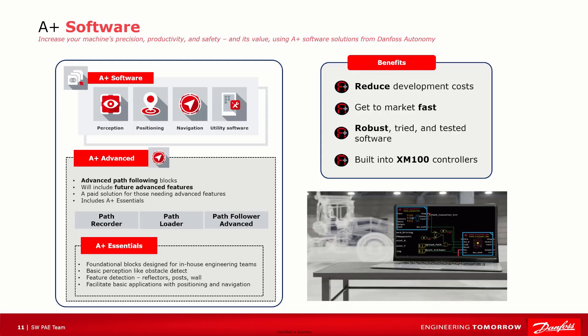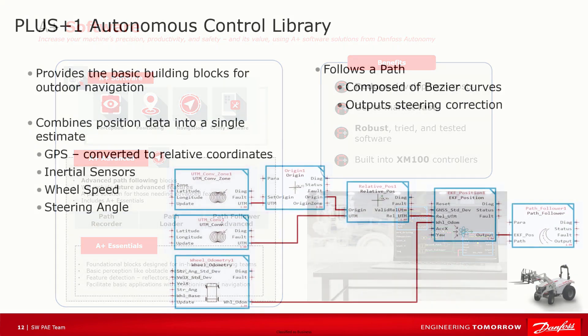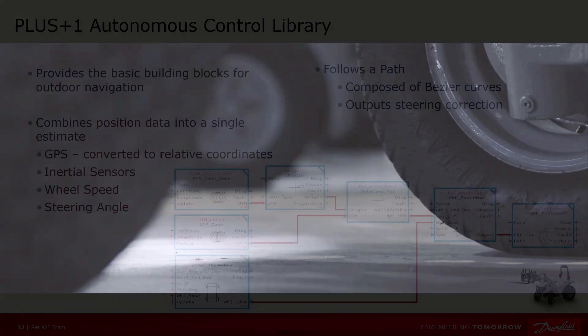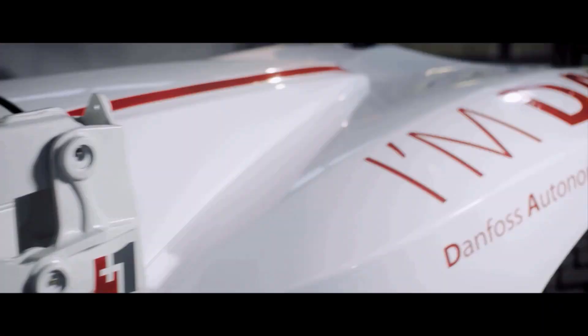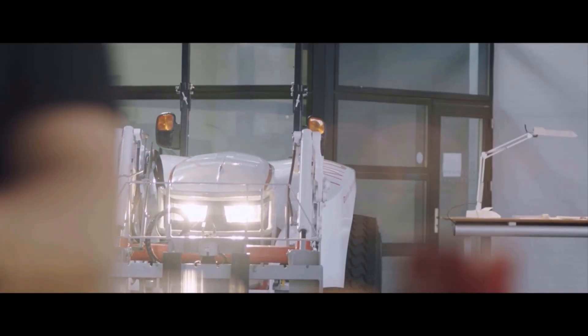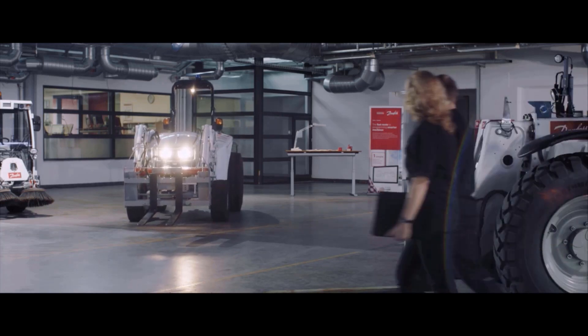Danfoss A Plus Software provides the software you need to make your machine autonomous through our easy-to-use PLUS ONE Guide interface. Danfoss can also deliver a full system of hardware and software that can be installed in your machine. If you have your own hardware already, we provide you with the autonomy software in the PLUS ONE Guide ecosystem. For more complicated operations, our developers are on hand to provide you with the custom solutions you need.